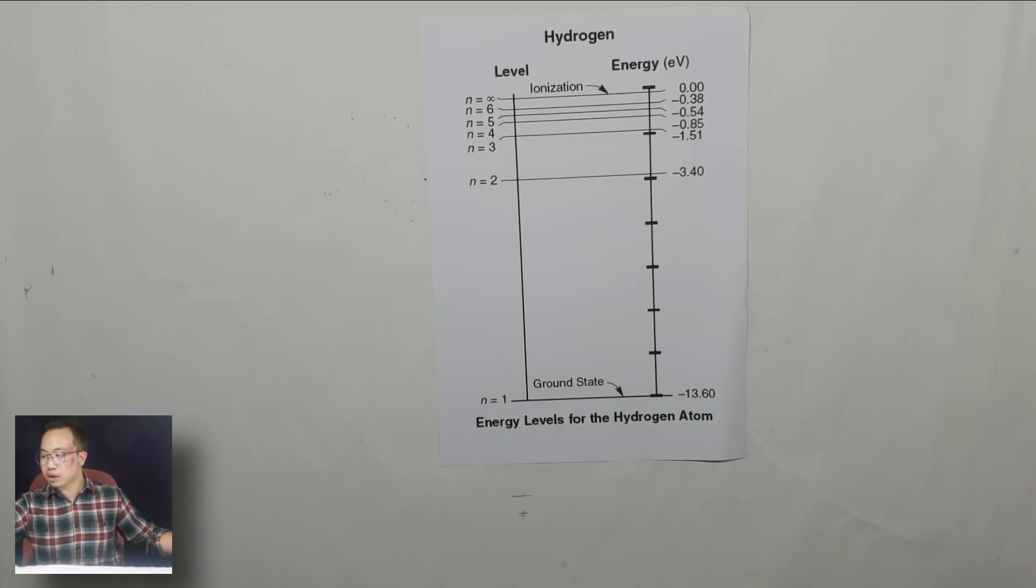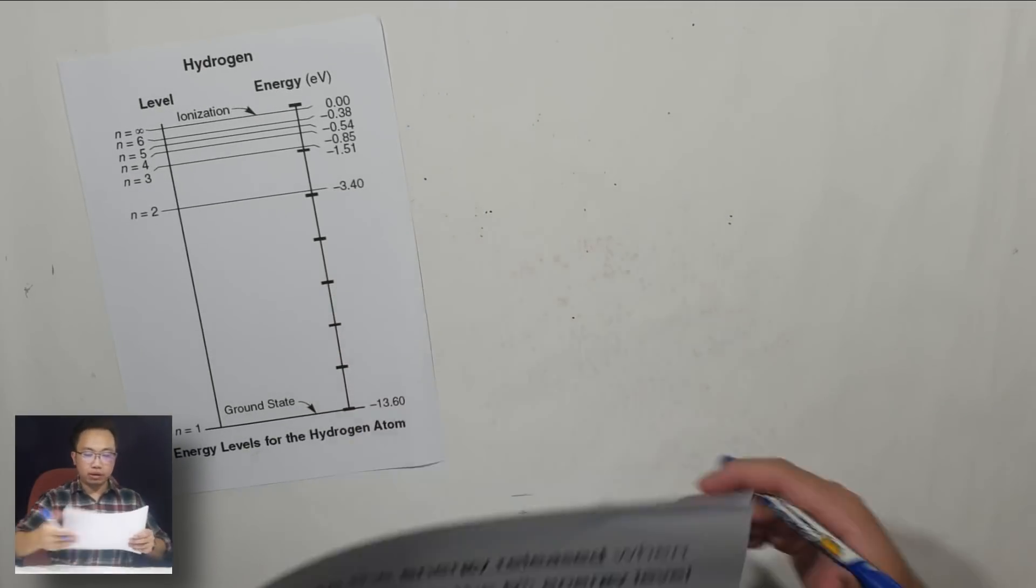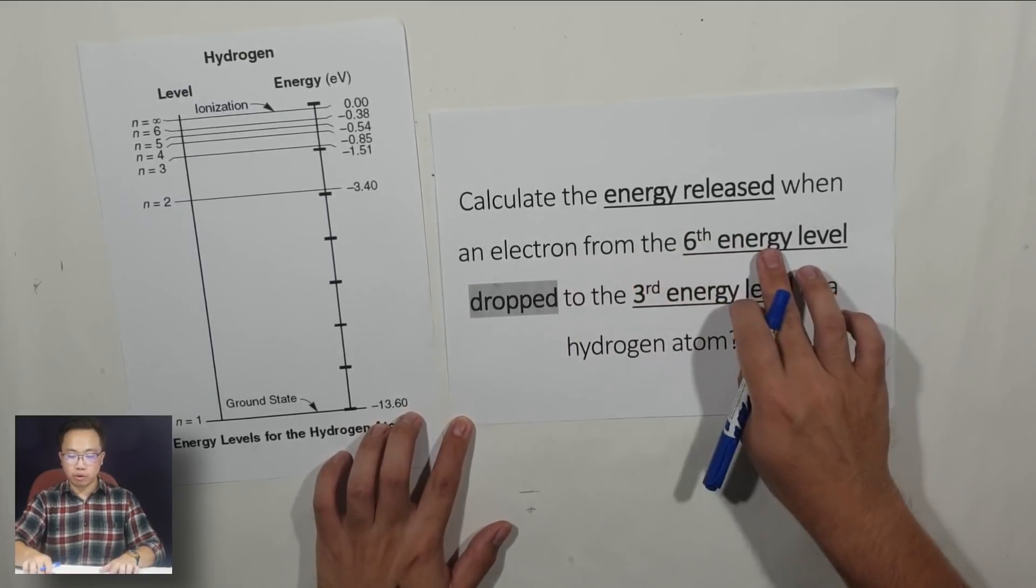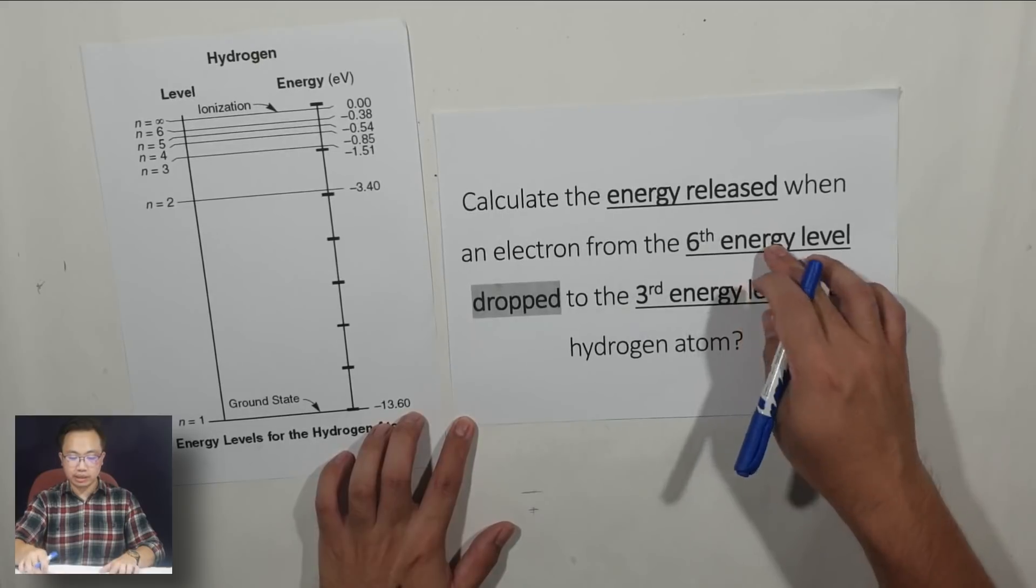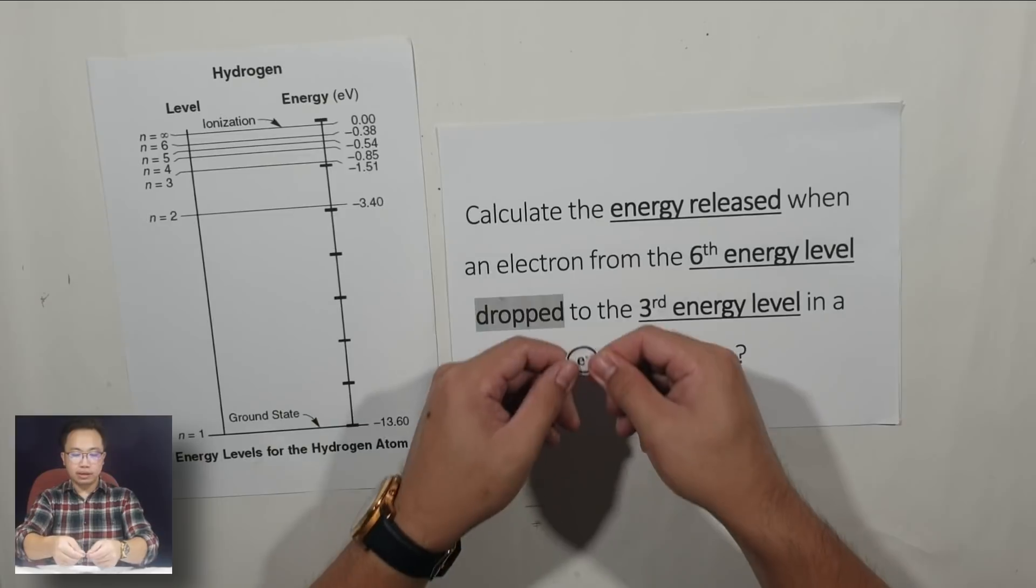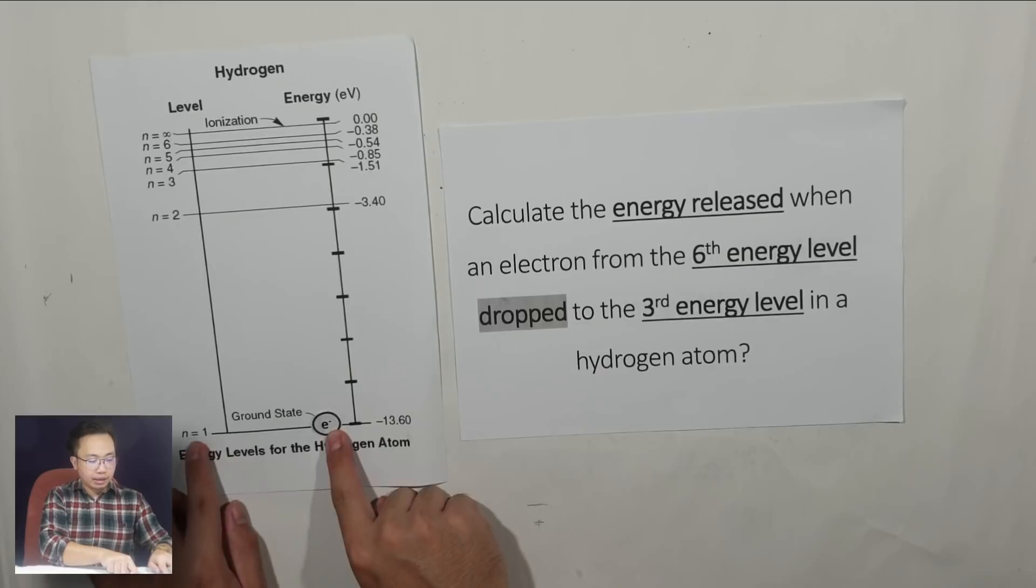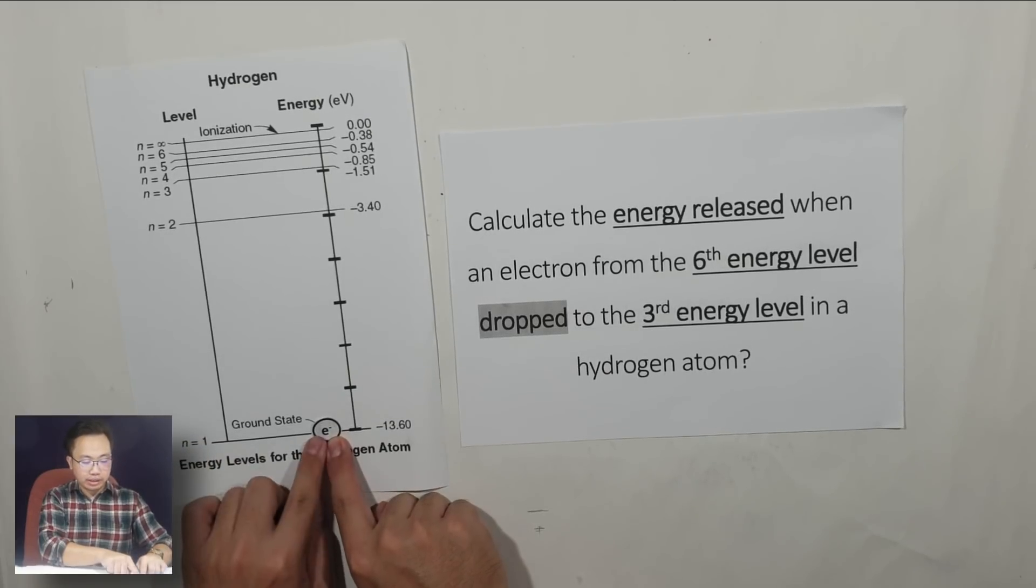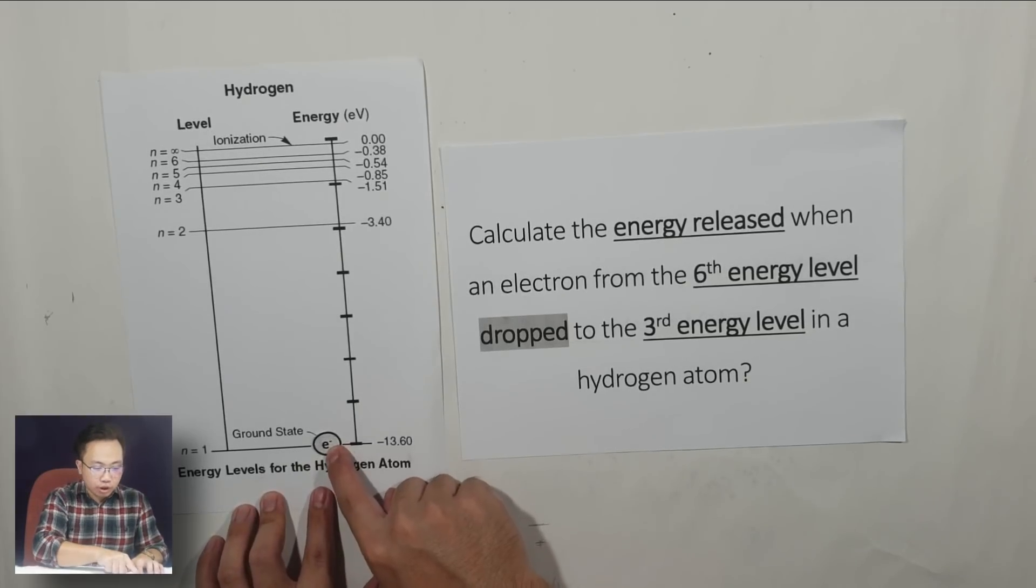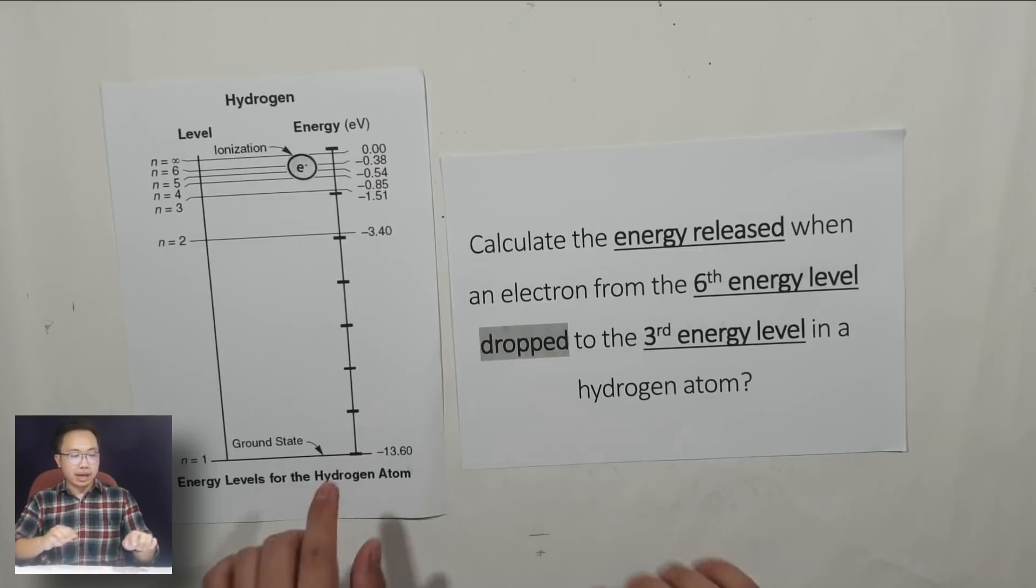The question just now wants you to calculate the energy released when one electron dropped from energy level number 6 to the third one. Imagine you have this electron at the ground state, N equals to 1. When this electron receives energy from outside, it will jump to energy level number 6.